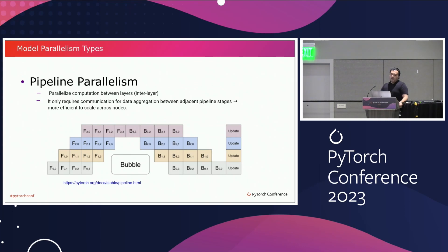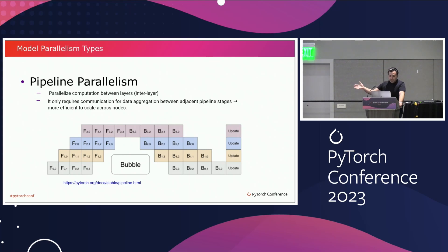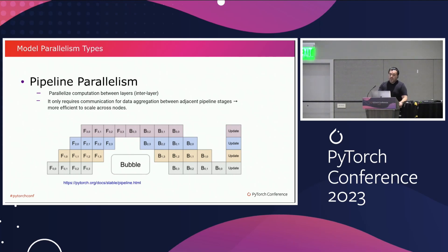The other major approach is pipeline parallelism, where you cut your model horizontally into multiple stages, each holding a bunch of layers. You send the output of the first stage as the input to the second stage. You need to couple this technique with micro-batching, otherwise you cannot utilize your GPUs smartly. Due to the nature of the communication, pipeline parallelism is more suitable for scaling to multi-nodes.